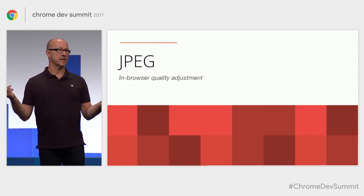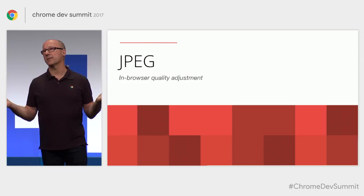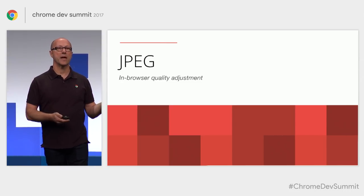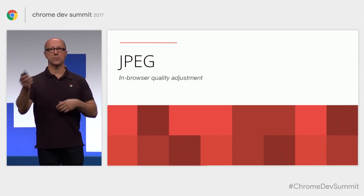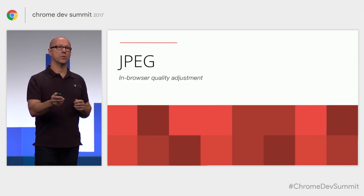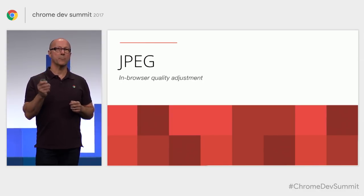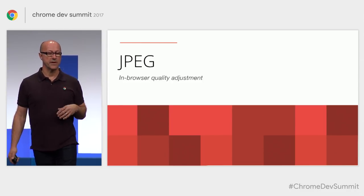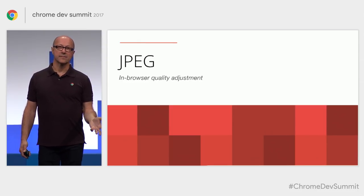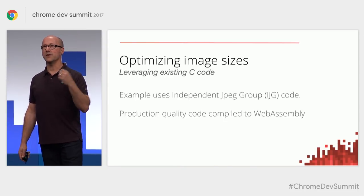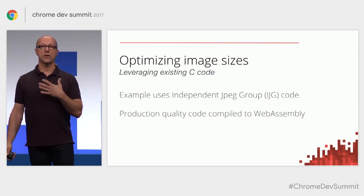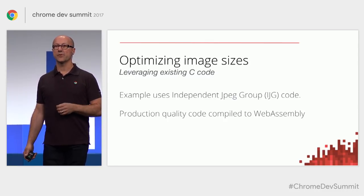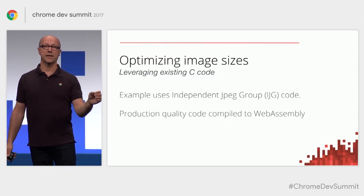We all build websites, and these days your average website is probably a megabyte or so — and 80% of that would likely be images. My workflow is typically to take photos, pull them into Photoshop, crop and tweak, then adjust quality to get the image small. We want to save bytes on the wire. I thought: what if we could actually do that inside the browser? So I took the independent JPEG group codec — code that's in a lot of production applications, probably 20 years old, rock solid, ships in production.